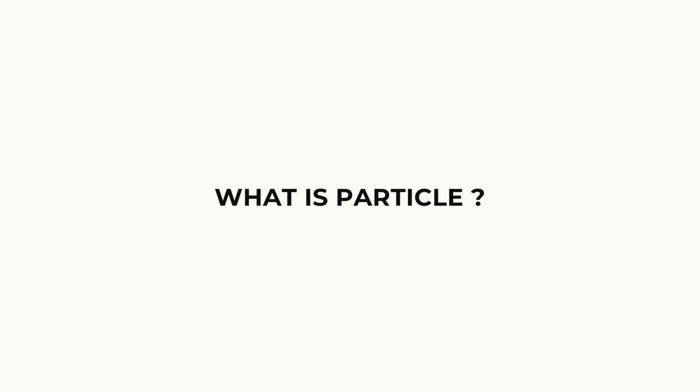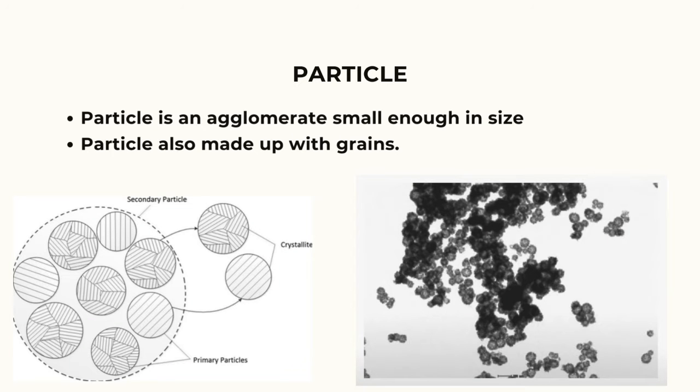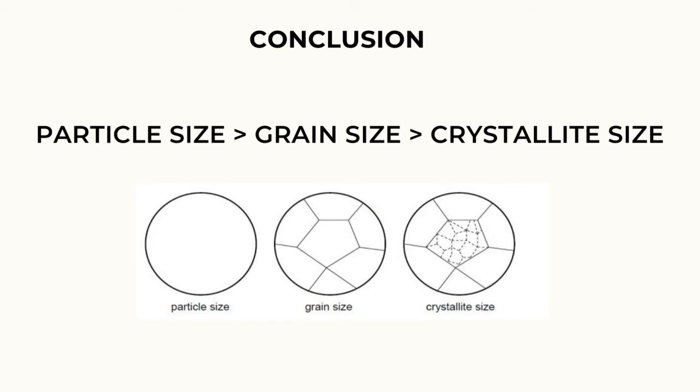Next, what is particle? Particle is an agglomerate, small enough in size, to not consider as a thin film or a bulk, but comprised of two or more crystallites. Particle also made up with grains. The size of particle is the largest, followed by the grain size, and the crystalline size is the smallest among three of them.